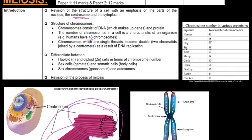Chromosomes which are a single thread become double. Two chromatids are joined by centromere during DNA replication.